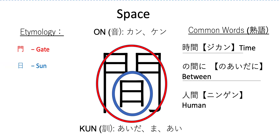The second word we have is between. Now this can be used for temporal or for physical things. It can be used for a physical space or a time space. For example, nihon ni sundeta aida ni — during the time I was in Japan. Or watashi to kono pasokon no aida ni — the space in between myself and the computer.